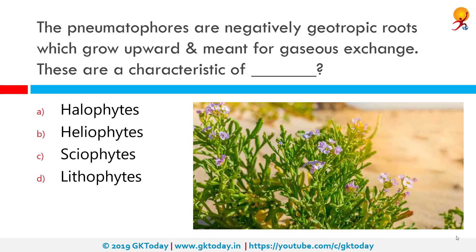Pneumatophores are negatively geotropic roots which grow upward and are meant for gaseous exchange. These are characteristics of which organisms? These are characteristics of halophytes. A halophyte is a salt-tolerant plant that grows in waters of high salinity, coming into contact with saline water through its roots or by salt spray, such as in saline semi-deserts, mangrove swamps, marshes, and seashores.